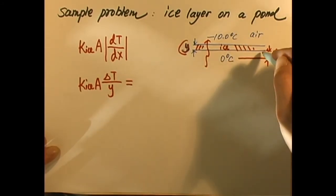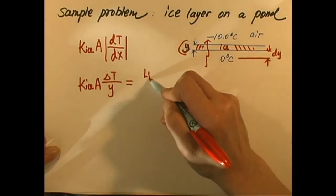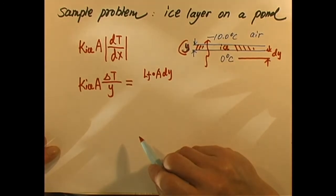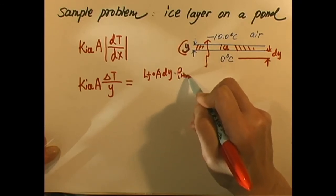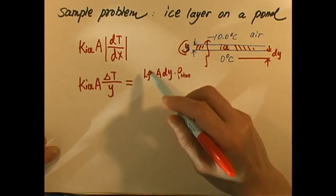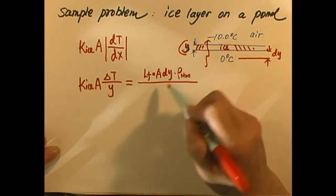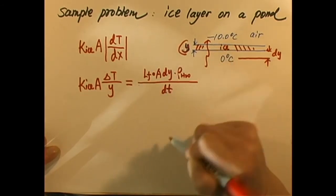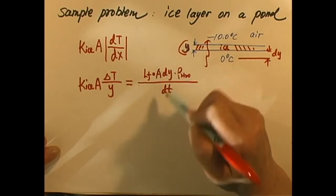That is latent heat of fusion times cross-section area times dy. A times dy gives volume. Volume, we must times density, the density of water because it's H2O. This is mass. Mass times latent heat of fusion, that is the heat released, divided by the time dT. By freezing dy layer of water, it takes dT seconds. This is how much heat is transferred.